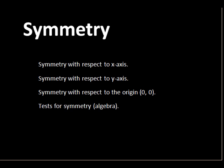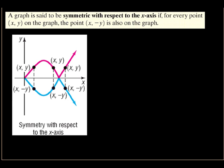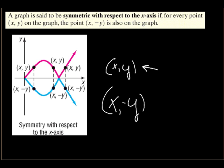Our final topic in this lecture is symmetry — symmetry with respect to the x-axis, the y-axis, and the origin (which is the point 0, 0). For x-axis symmetry, imagine placing a mirror on the x-axis. If the original point is (x, y), then the symmetric point is (x, -y). For example, if the original point is (3, 5), the symmetric point with respect to the x-axis is (3, -5).